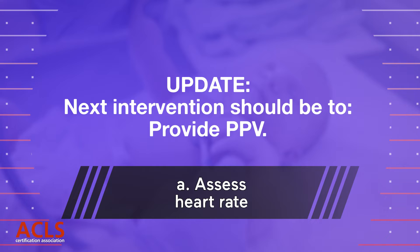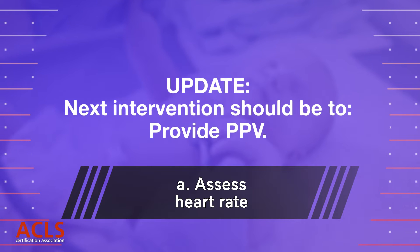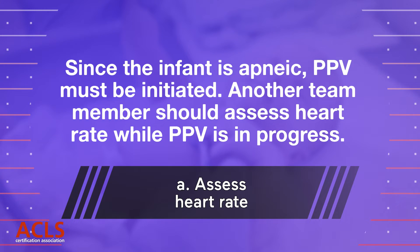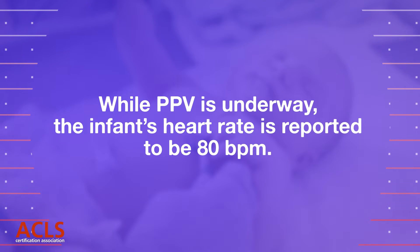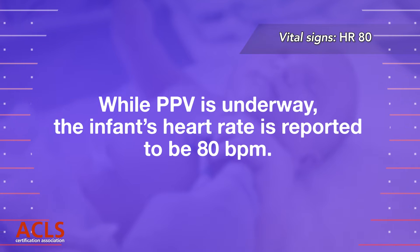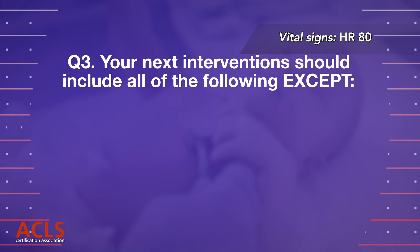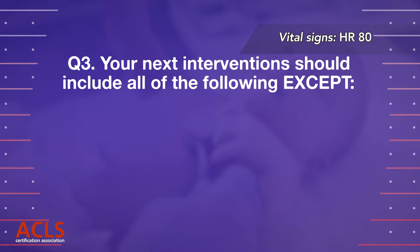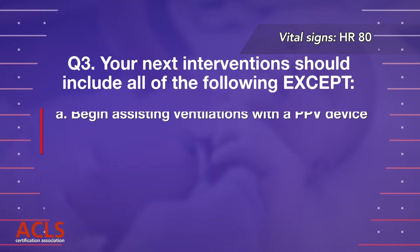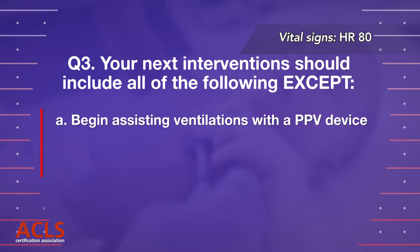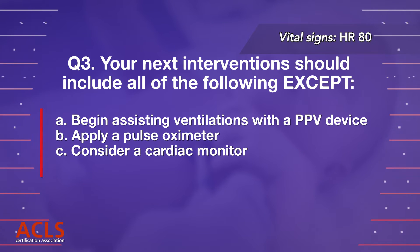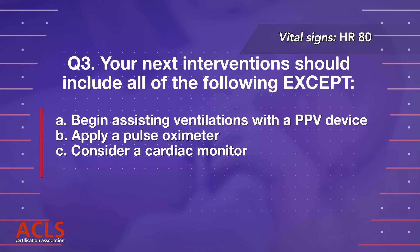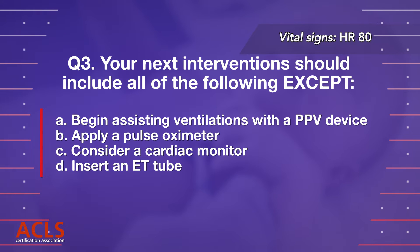Question 3: The infant's heart rate is 80 beats per minute. Your next interventions should include all of the following except: A. Begin assisting ventilations with a PPV device, B. Apply a pulse oximeter, C. Consider a cardiac monitor, D. Insert an ET tube.